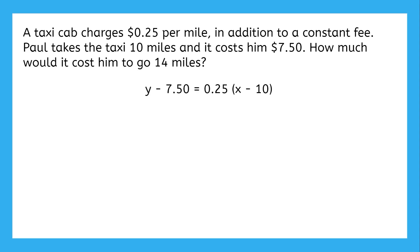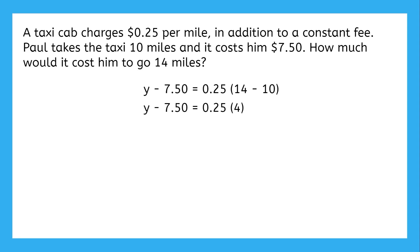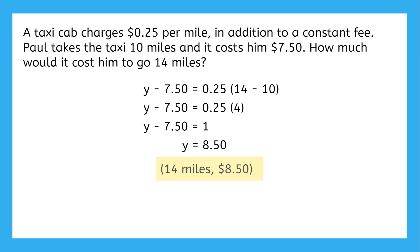Now that we've got a full equation in point-slope form, we can solve the problem. We want to know how much a 14-mile ride would cost. We said previously that number of miles was the x-coordinate, so we plug in 14 miles for x and then solve for y. 14 minus 10 is 4, multiply that by 0.25 to get 1, and then we add 7.50 to both sides and we get that y is 8.50. So the answer to the question is: to ride 14 miles in this taxi costs $8.50.